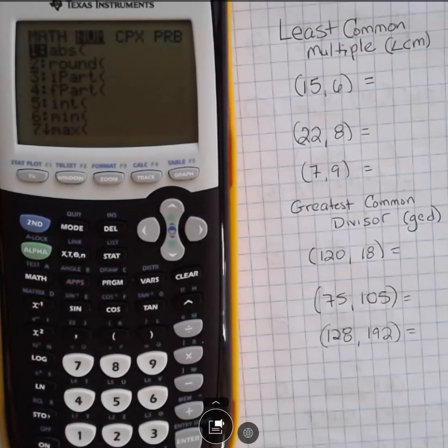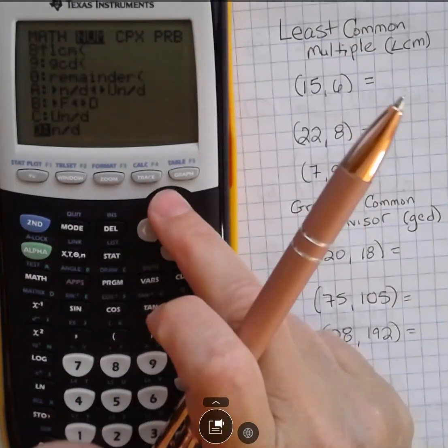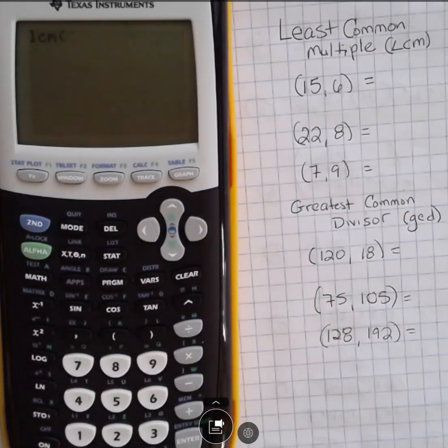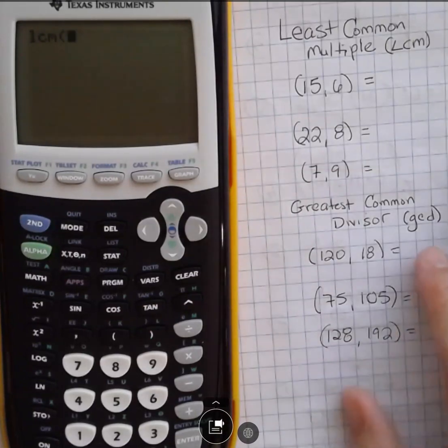And then you can't see it here. I'm going to scroll up because I think it's faster. You can see number 8 is LCM. I can just hit number 8. It'll take me here. LCM, least common multiple.